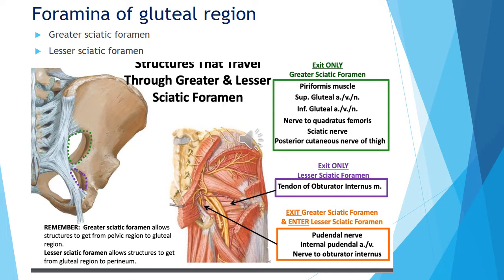We are going to talk about the ischial spine. The foramen is formed by the sacrotuberous and sacrospinous ligaments. We will discuss the sacrotuberous ligaments and the coccyx-sacrum region, along with the ischial tuberosity.